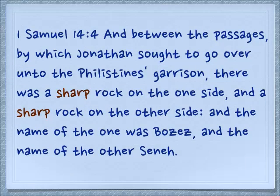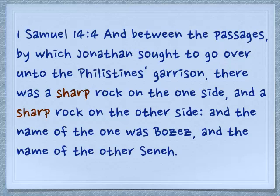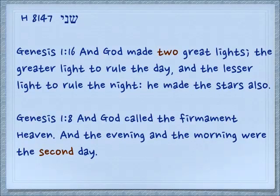In a related idea, this word also means sharp, as your teeth are sharp. In 1 Samuel 14:4 — 'Between the passages by which Jonathan sought to go over unto the Philistines' garrison, there was a sharp rock on the one side and a sharp rock on the other side, and the name of one was Bozes and the name of the other was Senna.'